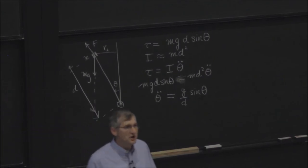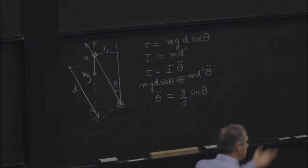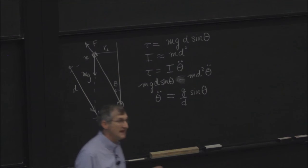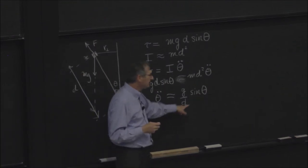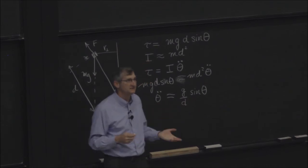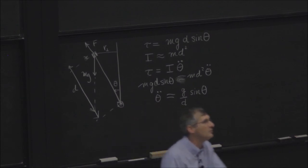So two comments. First, does that make the argument that it should be easier when the mass is farther away? Is that consistent with that argument? Because when d is bigger, for a given angle, we're going to get smaller acceleration, which means it's going to take longer for it to tip more, which means I have more time to react.